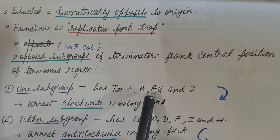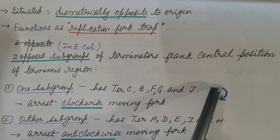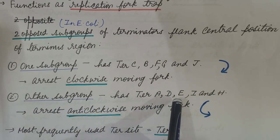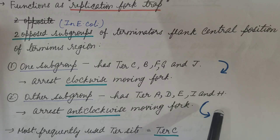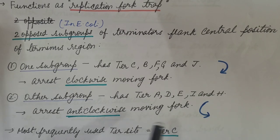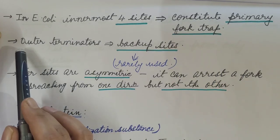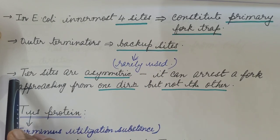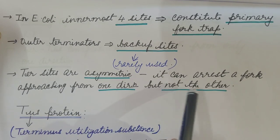One subgroup has ter B, ter F, ter G, and ter J — this arrests the clockwise-moving fork. The most frequently used ter site is ter I. In E. coli, the innermost four sites constitute the primary fork trap. Outer terminators are backup sites that are rarely used. Ter sites are asymmetric — they can arrest a fork approaching from one direction but not the other.